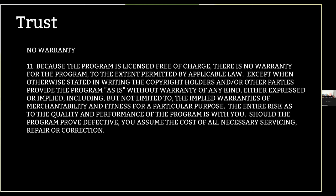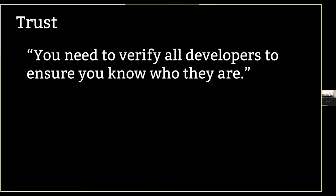We want people to use our code, so we have to give them some assurances that we're doing things in a good way. When the University of Minnesota thing came out, lots of people instantly said you have to verify everybody who submits to the kernel — you have to know who they are, track who these people are, and based on who they are, trust them. That's a normal knee-jerk reaction — you want verification of all your submitters. But that's just wrong, and I'll show you why. This is a very naive reaction to a problem that it doesn't solve at all.